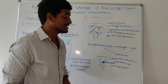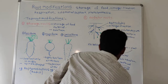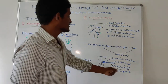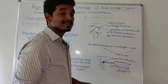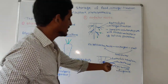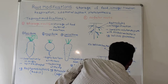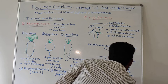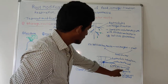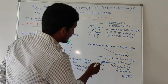The Rhizobium bacteria has a special enzyme called nitrogenase. For the function of this nitrogenase enzyme, it requires anaerobic conditions — absence of oxygen. Nitrogenase helps in nitrogen fixation and requires these anaerobic conditions. When the Rhizobium bacteria is present inside the root, anaerobic conditions are required for the functioning of the nitrogenase enzyme.